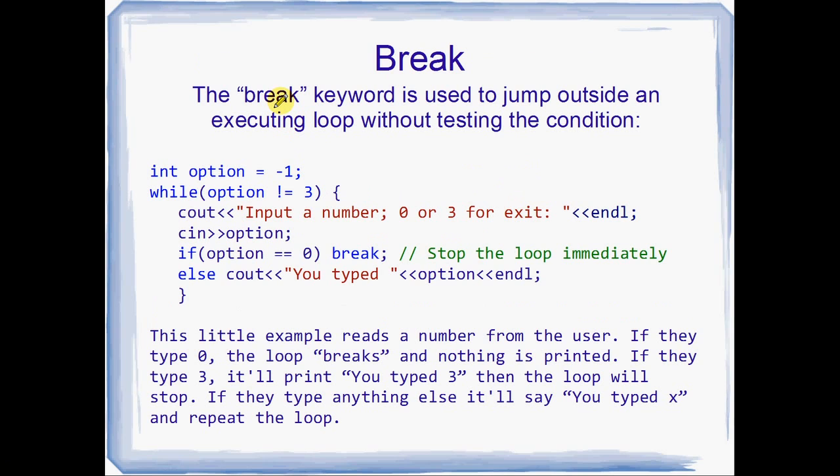Okay, so I mentioned breaking in loops a minute ago. To break in a loop is to jump out of the loop without even checking the condition. Here we've got a little example of exactly that. The break is a keyword. Visual Studio is going to paint it blue for you because it's a keyword. Anyway, int option equals negative one. And then I've got a while loop. And my while loop says that while option does not equal three. So option initially is negative one. That's certainly not three. So the condition option does not equal three is true if option is negative one.